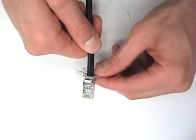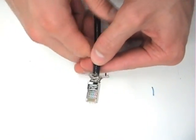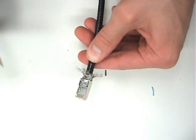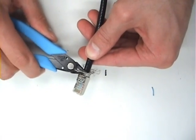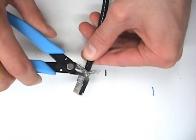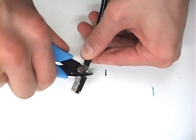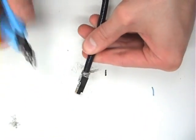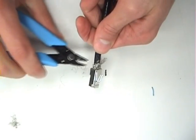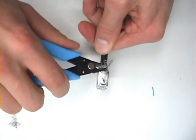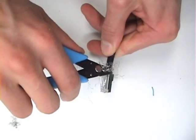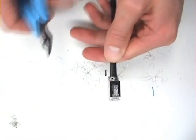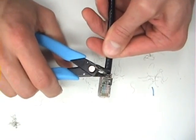And now you can remove the excess braid. It's not important to be extremely neat, because the boot is going to cover it. But remove most of the bulk.